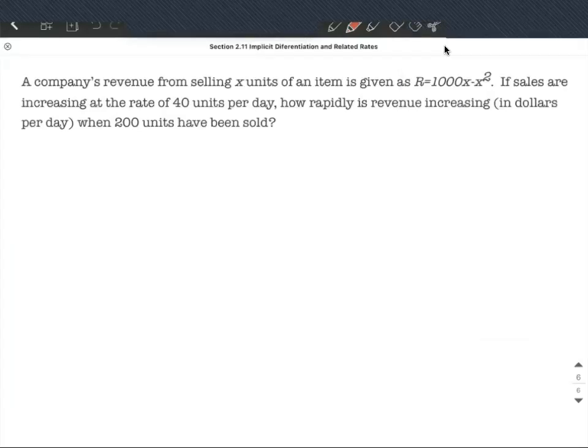Okay, we're told a company's revenue from selling x units, so the number of units of an item, is given by r equals 1000x minus x squared.